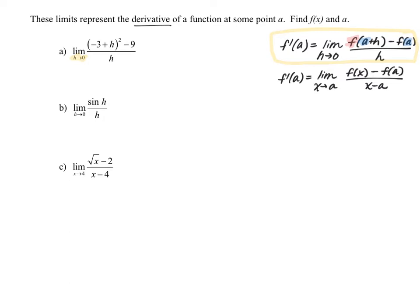Let me start with the value of a, because we're always going to have some quantity a plus h. So if you look for what's being added to h, you can see negative 3 plus h. That tells me negative 3 is being added to h, and that would be the value of a. So in this case, we're thinking a is equal to negative 3. We'll check that in just a second when we determine our function.